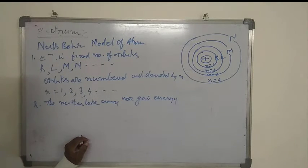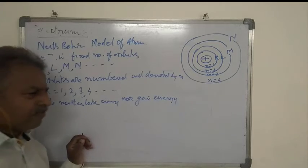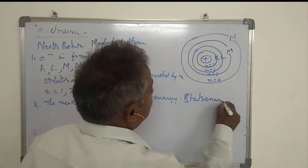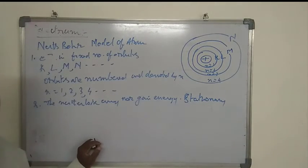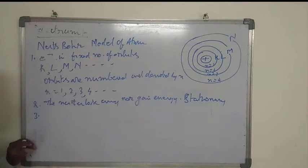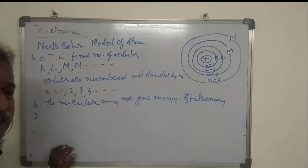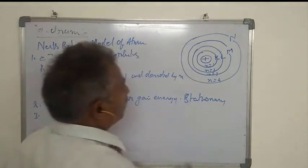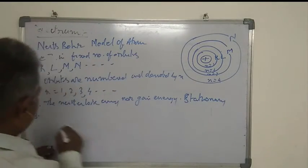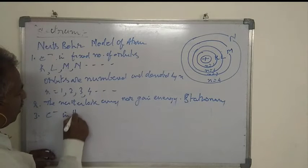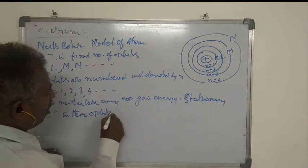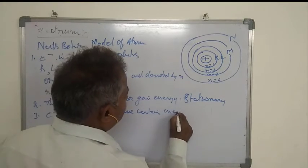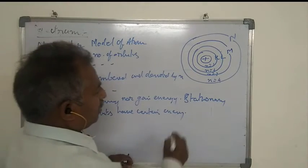That means, as long as electrons revolve in their own orbit, the energy is fixed. That is why these orbits are referred as stationary orbits. Stationary means no change — fixed. These electrons revolving in their orbits have certain amount of energy.